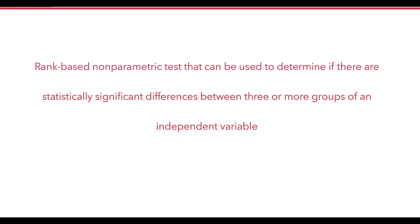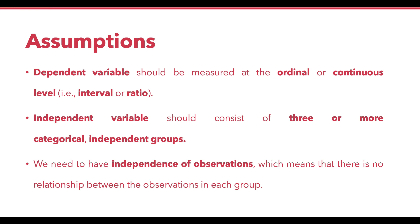The key term here is independent. There are in total three assumptions to apply this test. First, the dependent variable should be measured at ordinal or continuous level, meaning your data should be measured at interval scale or ratio scale. Second, your independent variable should consist of three or more categorical independent groups. Third, there is independence of observations, which means there is no relationship between the observations in each group.